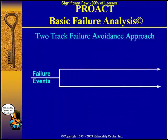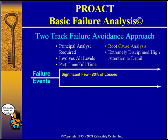The two-track approach consists of the significant few, which are the 20% of the problems that are causing 80% of the losses. For these kinds of items, we use an advanced or proactive root cause analysis method. The advanced method requires a principal analyst to lead a team, because this is the kind of problem that should have been solved already, and since it hasn't, we're going to put a team together.